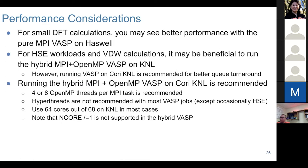We usually recommend hybrid VASP on KNL for performance reasons. As long as your system is not very small, you should see better performance. Usually four or eight threads per task is good, and we don't recommend hyper-threading. Consider using 64 cores out of 68.